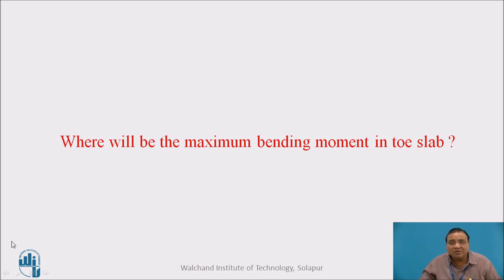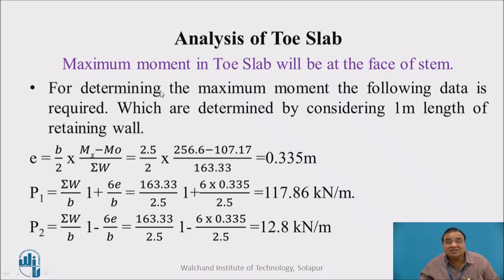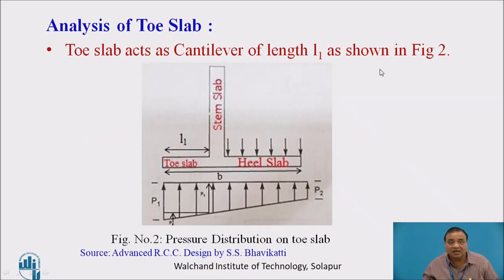Where will be the maximum bending moment in the toe slab? The toe slab is a cantilever which is subjected to a trapezoidal pressure, P1 on this side and P3 over here. The maximum bending moment in the toe slab will be at the face of the stem. It is a cantilever of length L1, so at this particular face we will get the maximum bending moment.